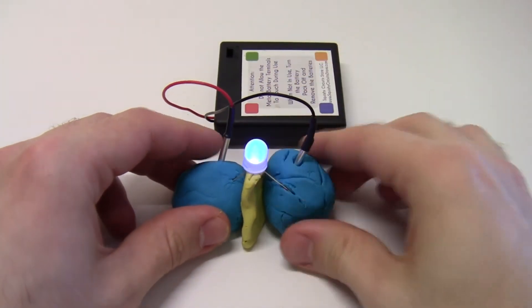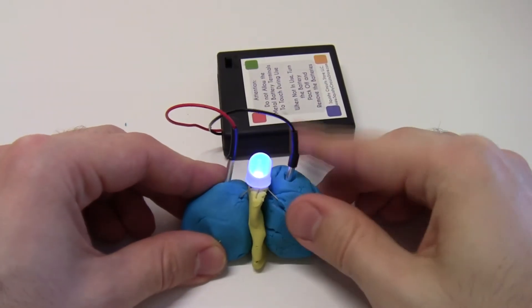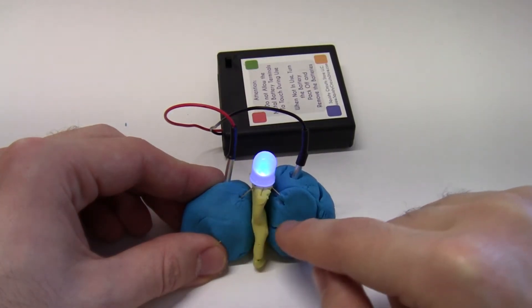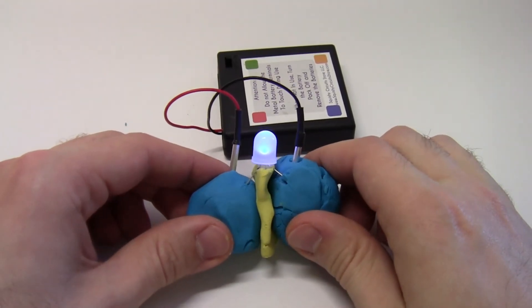Now when I press them together, you can see the LED stays lit because there is no short circuit. The piece of insulating modeling clay is preventing electricity from flowing between the two lumps of conductive Play-Doh, so the electricity has to flow through the LED and it lights up.